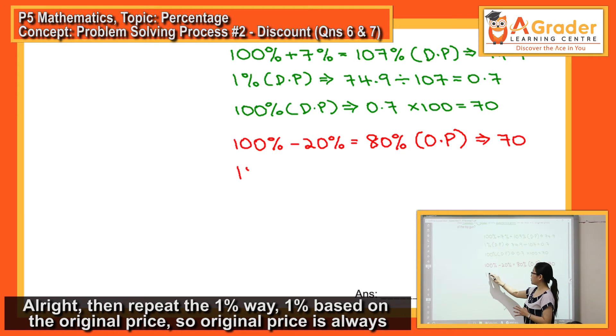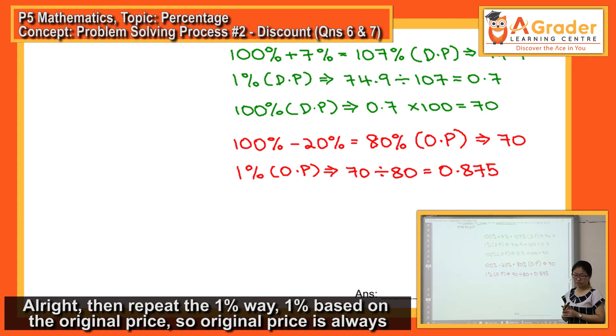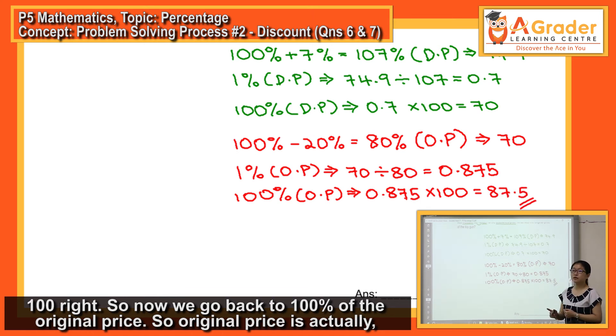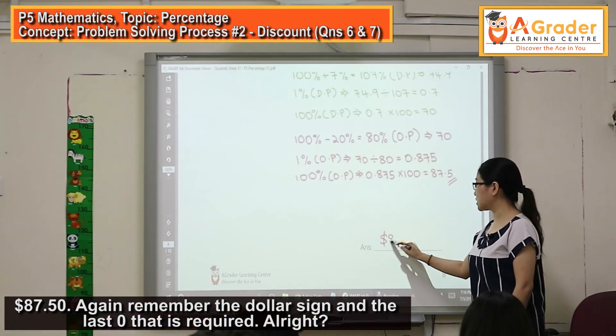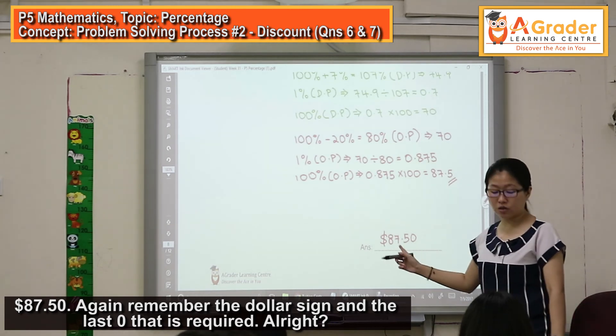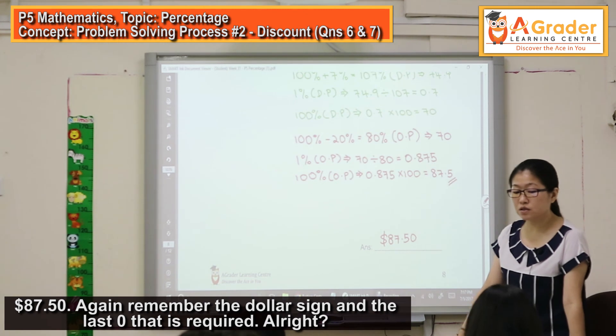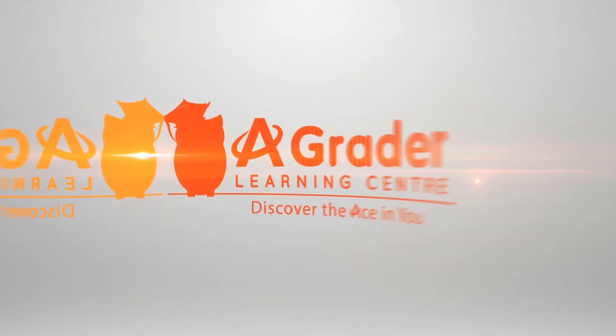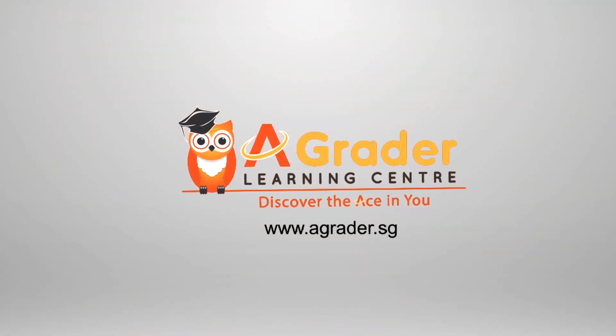So, original price is always 100. So, now we go back to 100% of the original price. So, original price is actually $87.50. Again, remember the dollar sign and remember the last zero that is required. So, that's it. That's it.